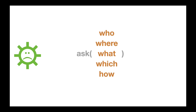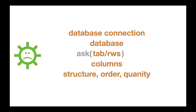So who are we making the request of? That's maybe the database configuration. Then, where does this data actually live — what actual database? And then there are aspects of what type of data we're returning: for example, what are the rows or tables we're going against, which rows do we want back, which columns, how do we return the results, how do we shape it, what's the structure, the order, and the quantity. All of these things are a lot to build into a single API.